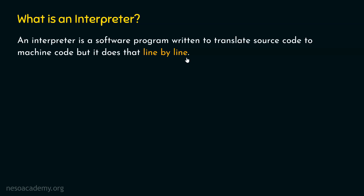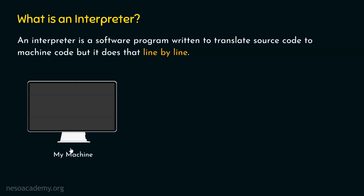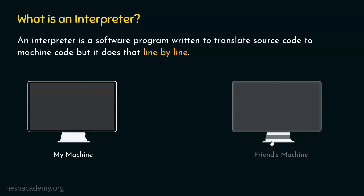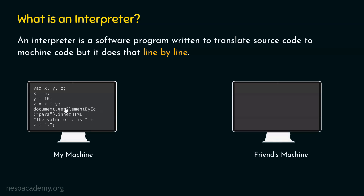Let's understand this with the help of an example. This is my machine and this is my friend's machine. In my machine, I have written a JavaScript code. JavaScript is an interpreted programming language. Here we have three variables x, y and z. We have the statement x equal to 5, y equal to 10, z equal to x plus y. Since x is 5 and y is 10, z becomes 5 plus 10, which gives us 15.